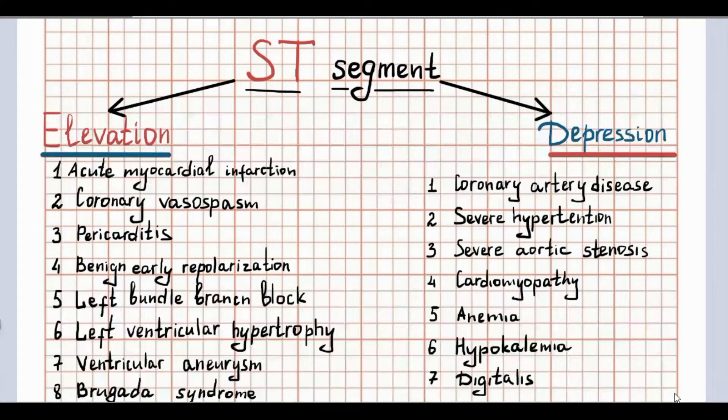The main causes of ST segment depression are coronary artery disease, severe hypertension, severe aortic stenosis, cardiomyopathy, anemia, hypokalemia, digitalis intoxication.